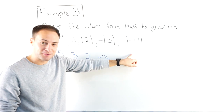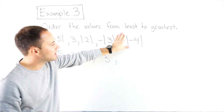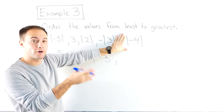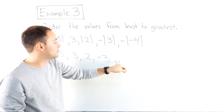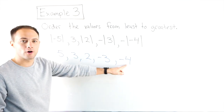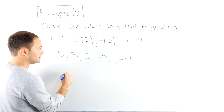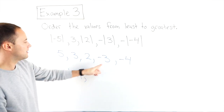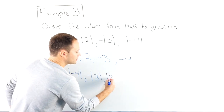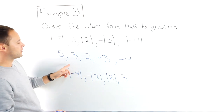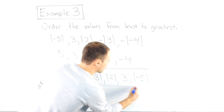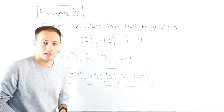Last one: the negative absolute value of negative four. Ignore the outside negative for a second and find the absolute value of negative four, which is four — negative four is four away from zero. Then put a negative in front, so this becomes negative four. Now ordering these from least to greatest: negative four is least, so the negative absolute value of negative four is first, then negative three which is the negative absolute value of three, then two which is the absolute value of two, then three, and finally the greatest is the absolute value of negative five. There is my order from least to greatest. Here's some more to try on your own.